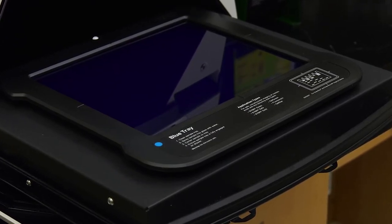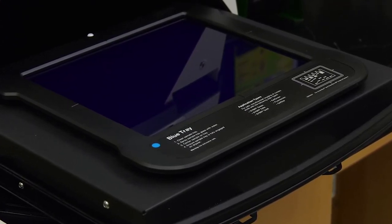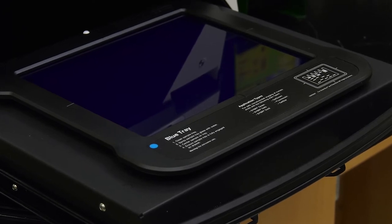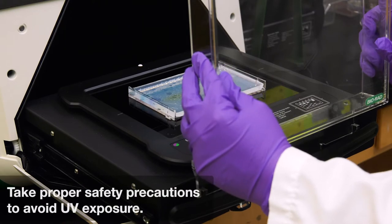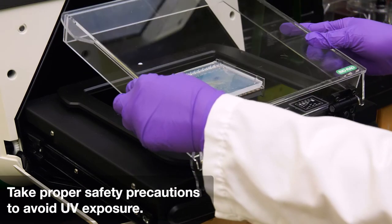The blue tray protects samples from UV damage. It also allows you to visualize DNA samples without a UV shield. The UV safety shield is necessary for band excision of UV-excited stains.